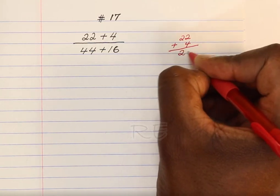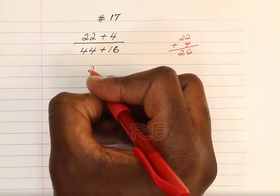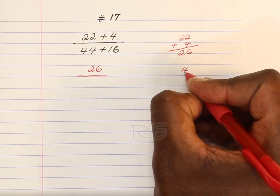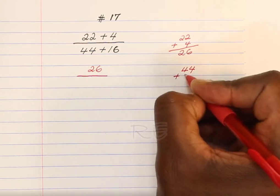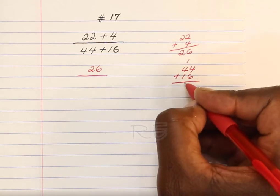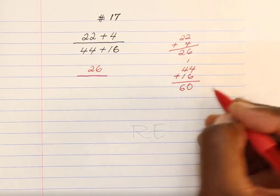First, we add 22 to 4, so it's equal to 26. And then we're going to add 44 to 16. We get 60.